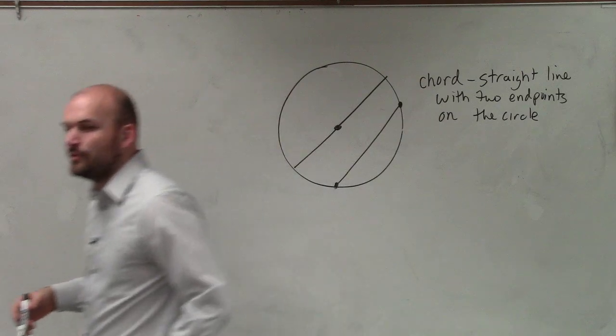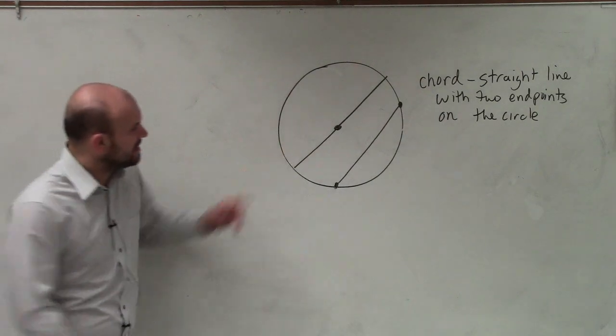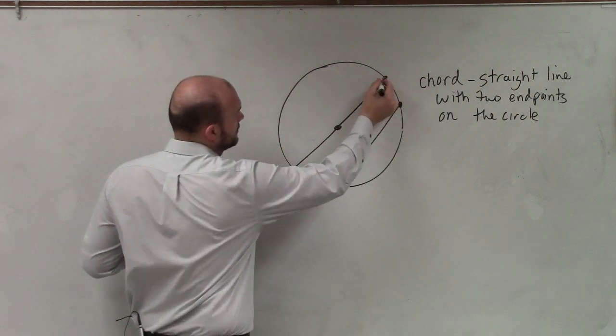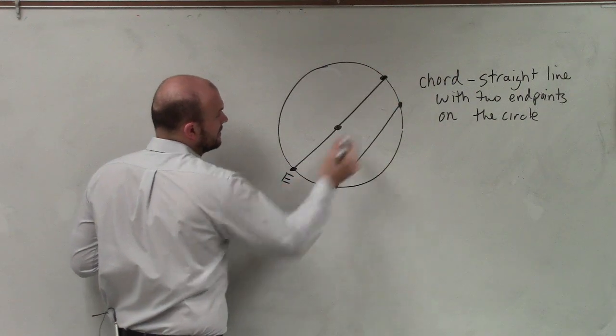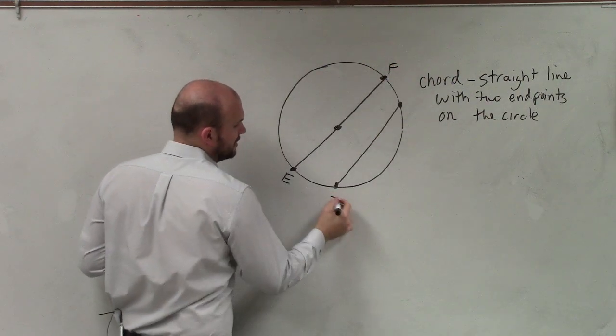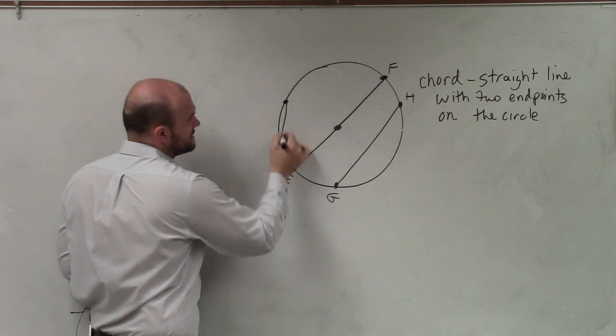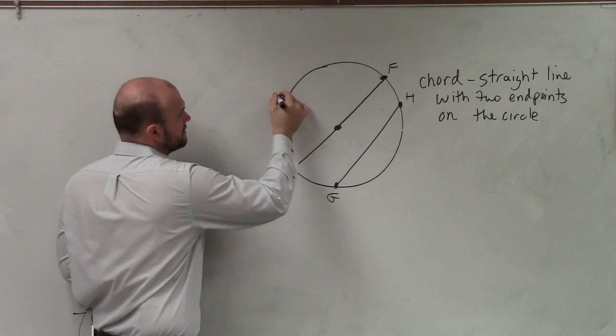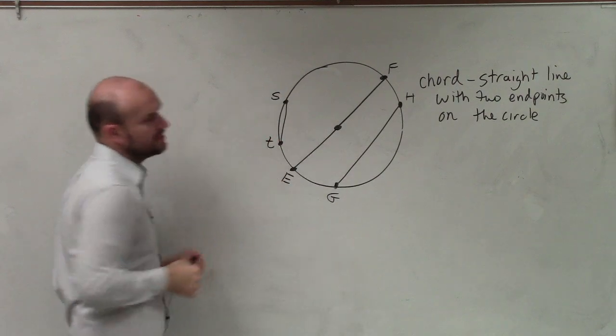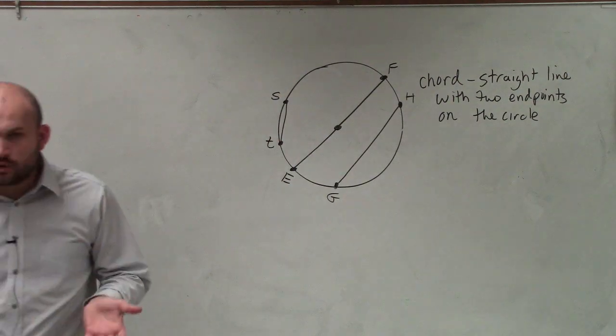Your two endpoints could be here, right? It could be E, F. It could be G, H. These are all examples of a chord. It could be something like this, S, T. Those are all examples of a chord.